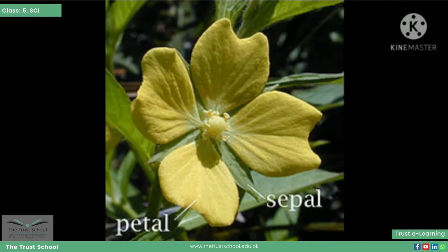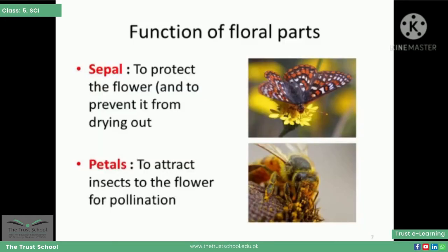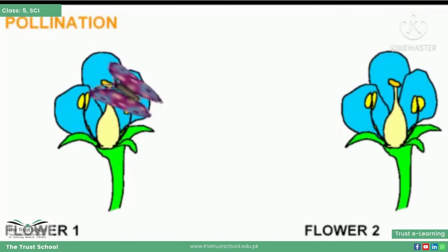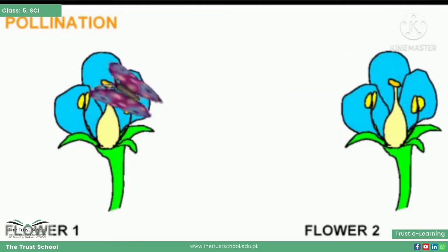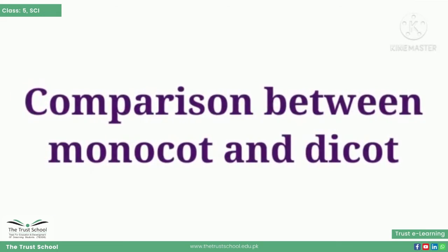A flower contains petals and sepals. The function of sepals is to protect the flower from drying out. The function of petals is to attract insects for the process of pollination — petals are colorful so they attract insects. Pollination is the transfer of pollen grains from one flower to another flower.